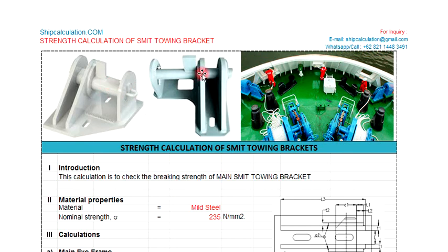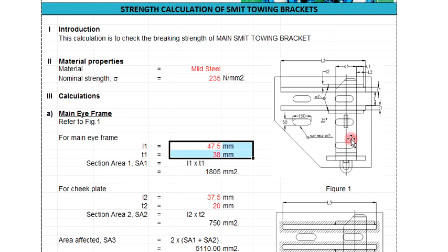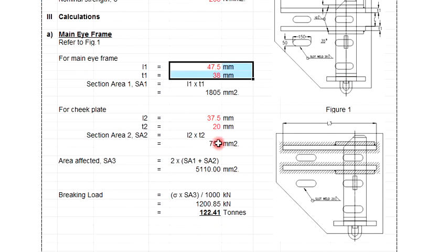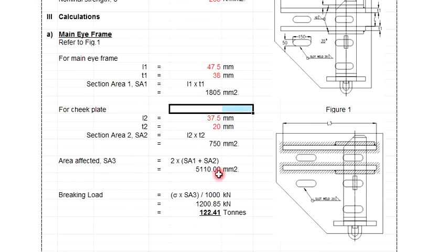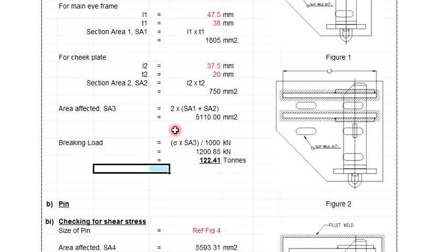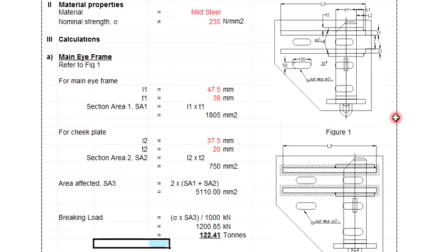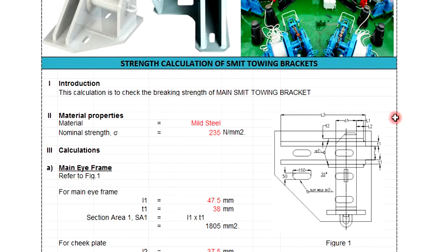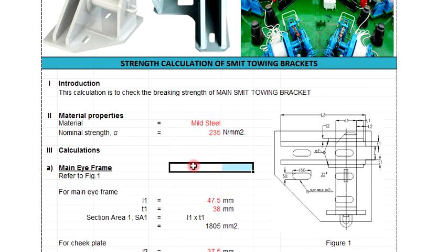The pin is this one. You need to check how much the breaking load is on the pin, so you know exactly whether this Smith bracket is able to be used for towing the vessel.